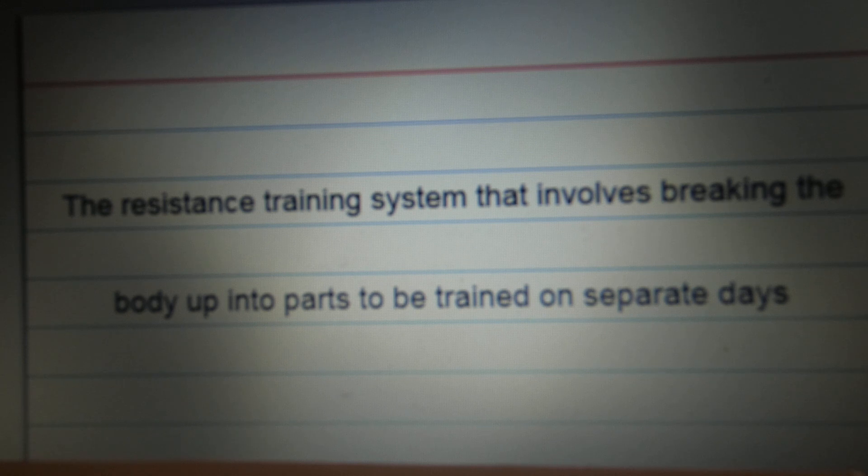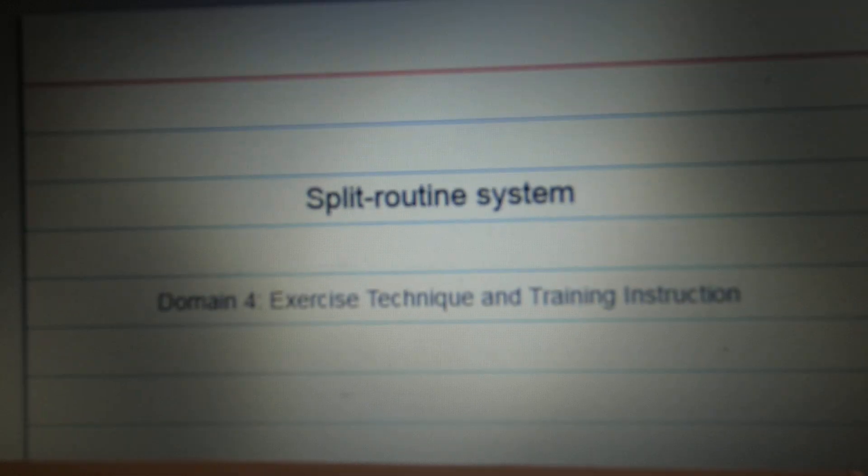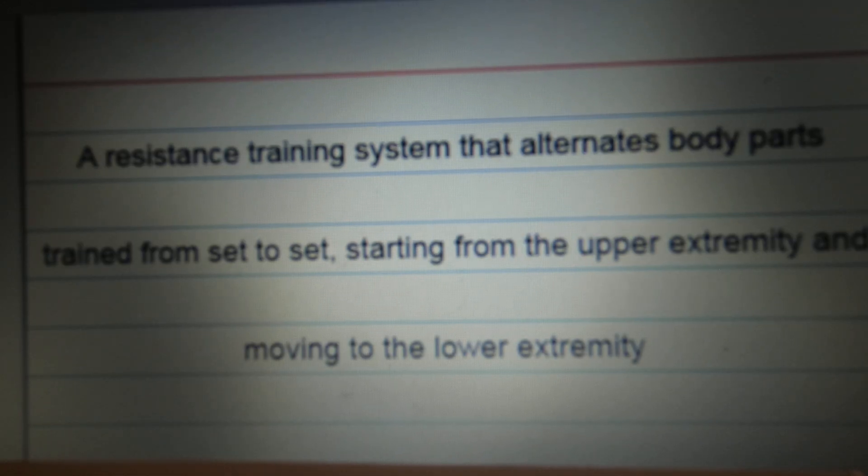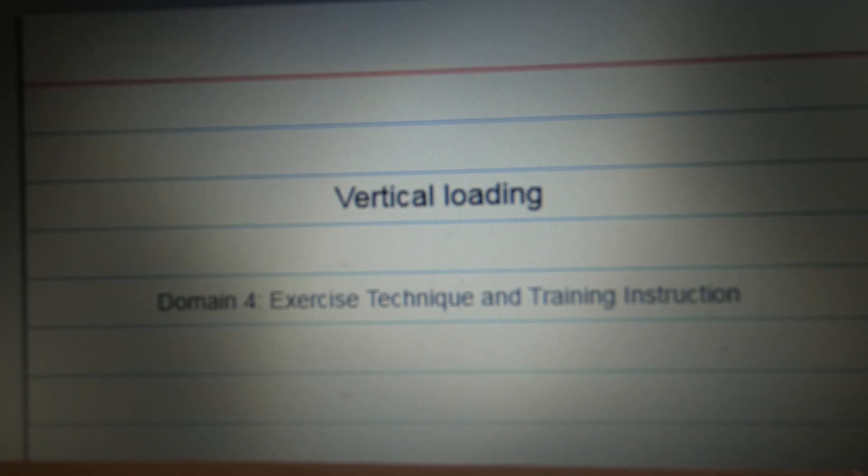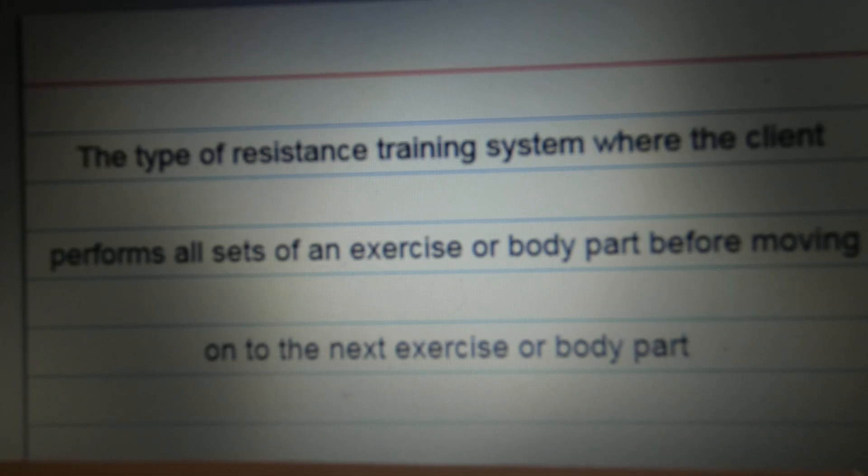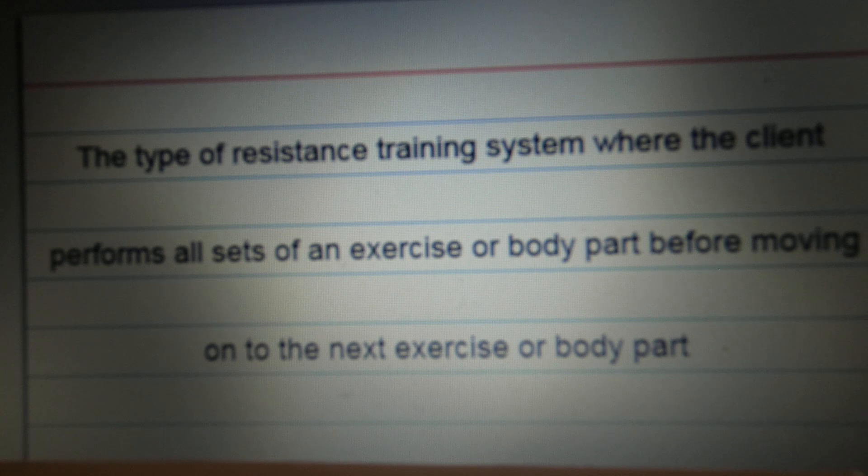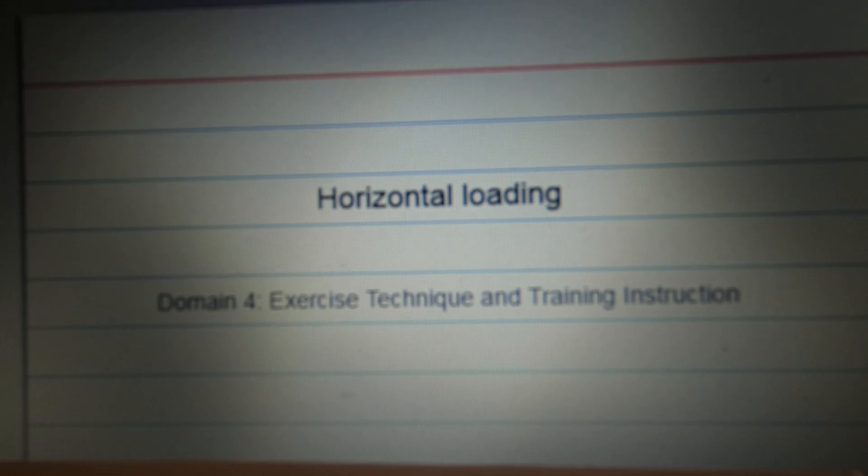The resistance training system that involves breaking the body up into parts to be trained on separate days. Split routine system. A resistance training system that alternates body parts trained from set to set, starting from the upper extremity and moving to the lower extremity. Vertical loading. The type of resistance training system where the client performs all sets of an exercise or body part before moving on to the next exercise or body part. Horizontal loading.